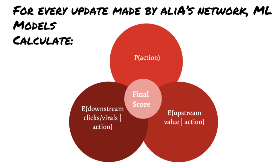For any update Ranbir or any of Alia's other connections makes, the algorithm calculates a score using the following three things, which are obtained using machine learning models. It calculates the probability of Alia taking action on the post — remember, an action could be a reaction, a comment, or a re-share. It also calculates the expected downstream clicks, or viral actions as LinkedIn likes to call them, when Alia interacts with the post.